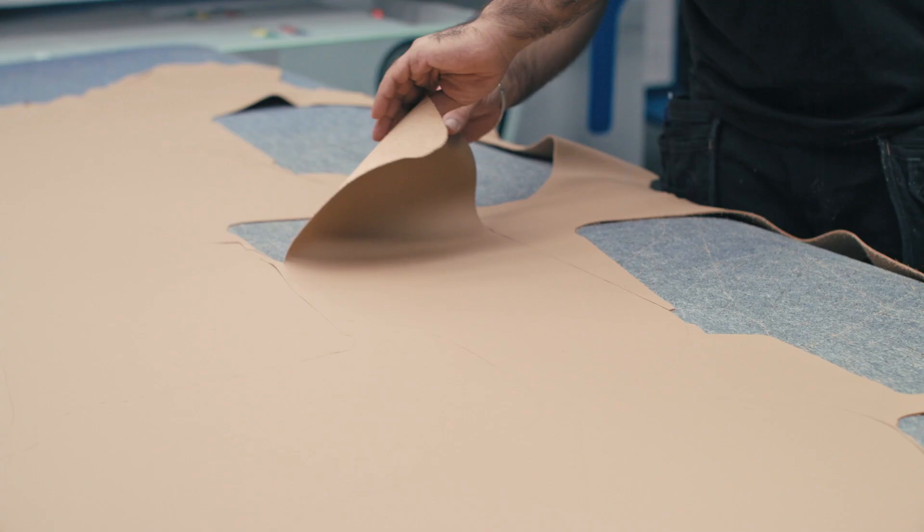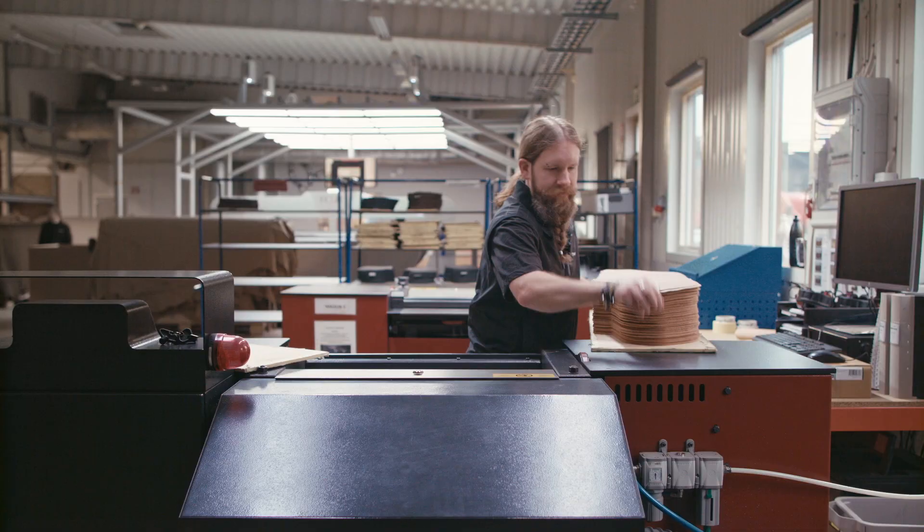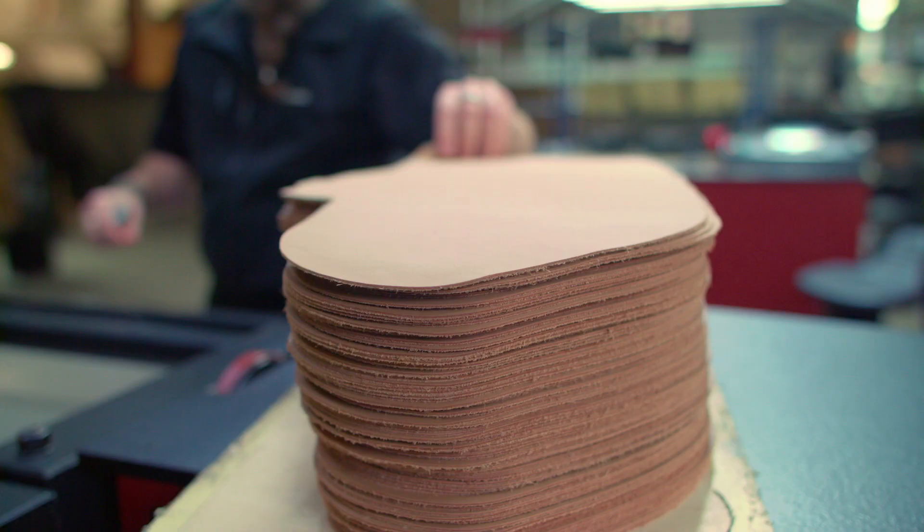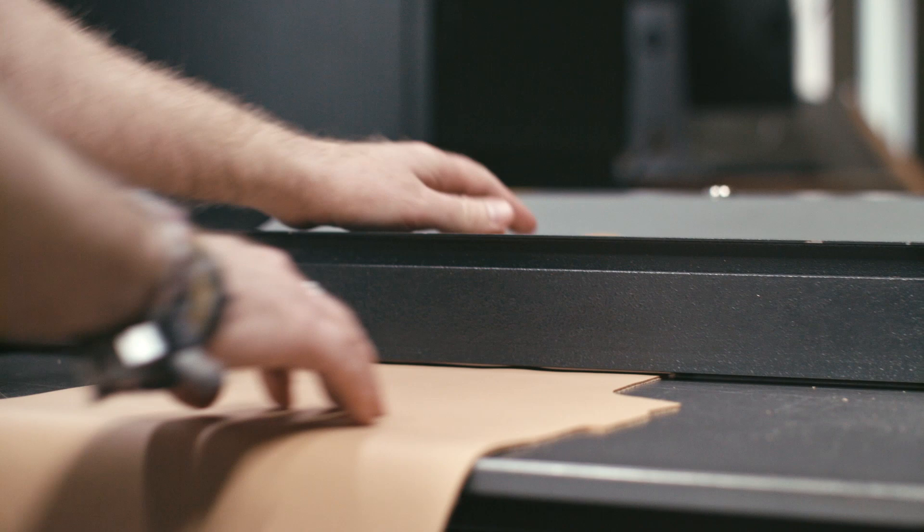The newly cut pieces are then checked once again for imperfections before the splitting process. Here, a blade thins out the leather to ensure the exact same thickness across the entire piece.